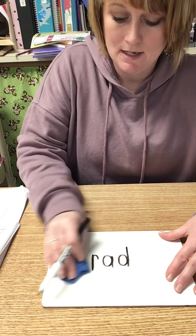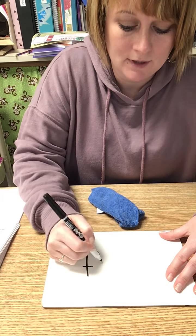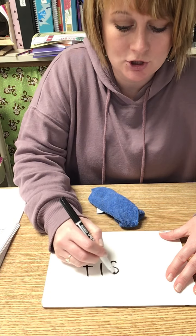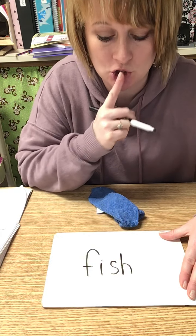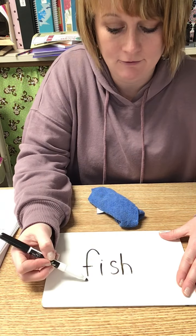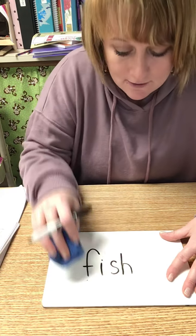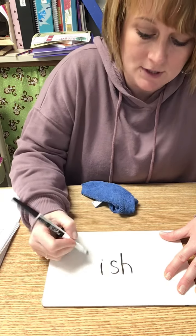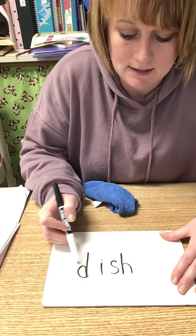And let's do F-I-S-H. When S and H are together, they go S-H. So I have F-I-S-H. Fish. If I change the F to D, it becomes D-I-S-H. Dish.